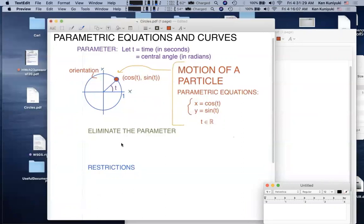Now, we can eliminate the parameter in these equations by considering the classic Pythagorean identity. Cosine squared t plus sine squared t equals 1. Well, x is cosine of t, so cosine squared t is x squared plus y is sine of t. Sine squared t is y squared. We get x squared plus y squared equals 1. And the graph of that is the unit circle.